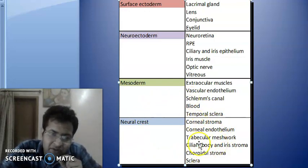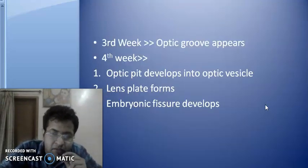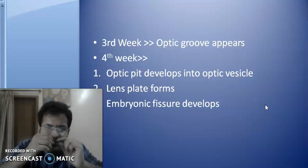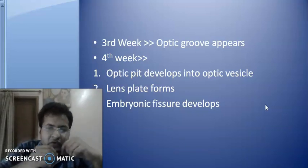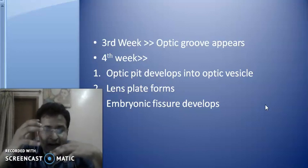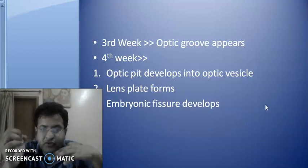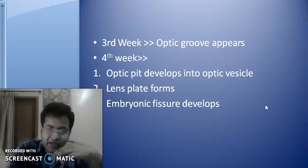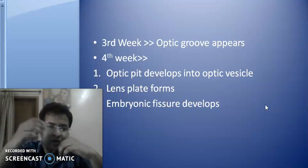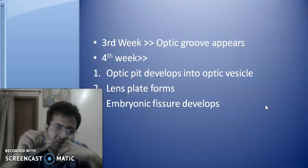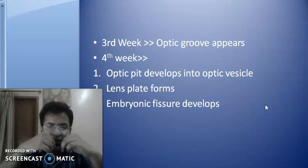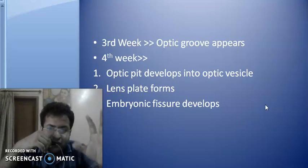So these all are the derivatives of the mesenchyme. We have discussed the various embryological differentiations. Now we see the timeline of these changes, so that we get an idea of what is happening at what stage — and if a teratogenic drug, mutation, or radiation is given, what structures in the eye can be affected, or if there is some injury at a particular week of embryological development, what structures will be affected.